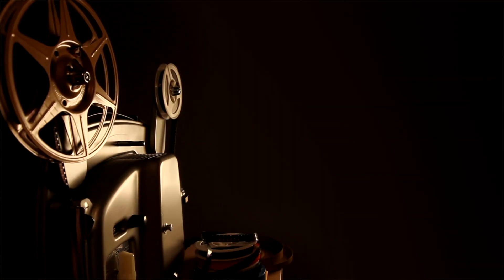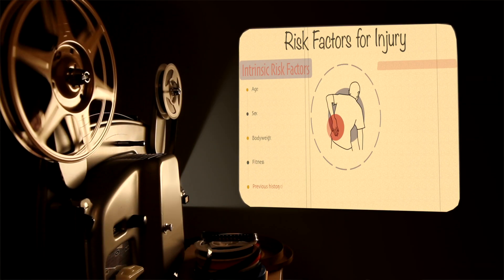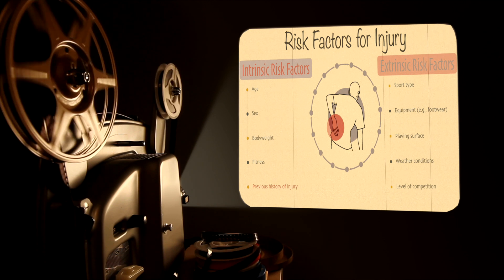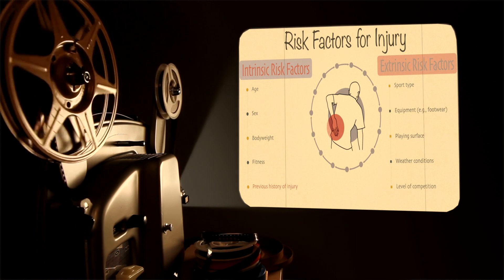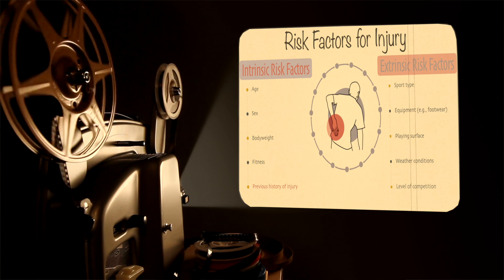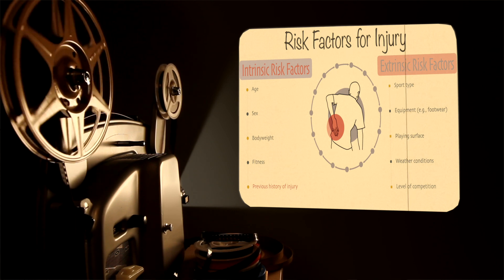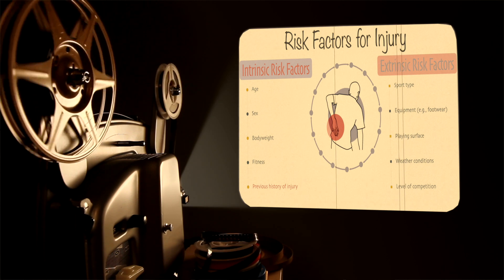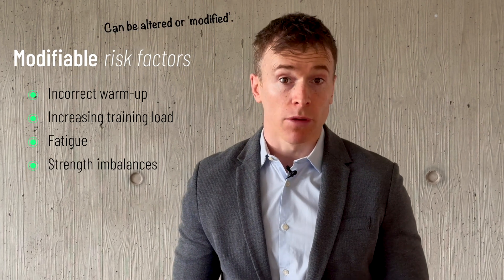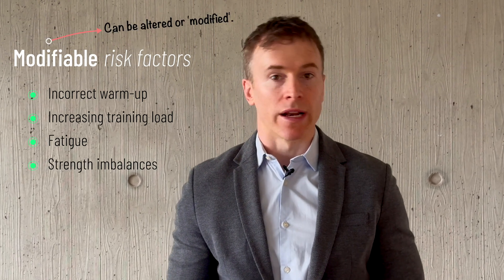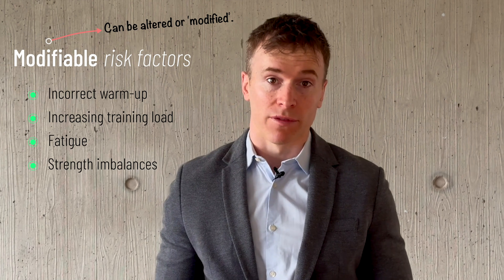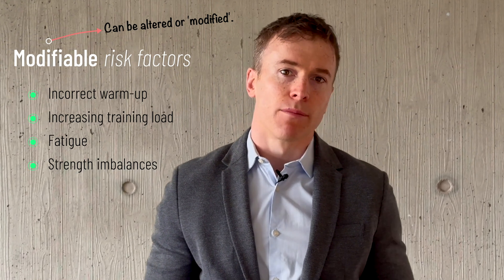Lots of different modifiable and non-modifiable variables contribute to the overall risk of muscle injury. One of the challenges in narrowing down these risk factors is caused by the lack of prospective studies looking at how muscle injuries develop in different sports and populations, or randomized control trials evaluating the best methods for reducing this risk. Despite this, the available research does point to certain modifiable risk factors: things like not warming up sufficiently, increasing your training load too quickly, training or competing while fatigued, or having certain strength imbalances between muscle groups.